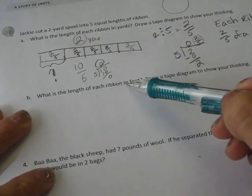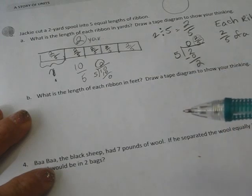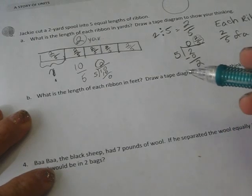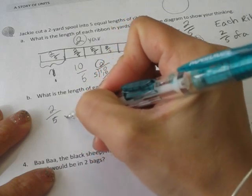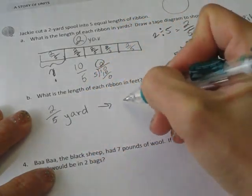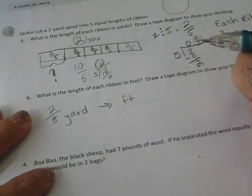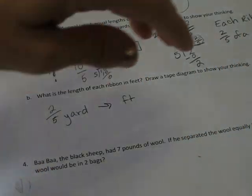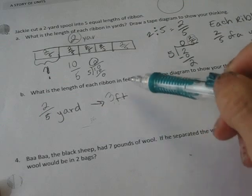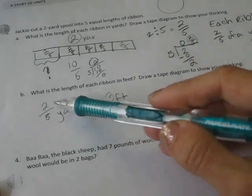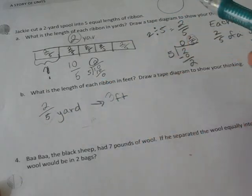What is the length of each ribbon in feet? Well this is 2 fifths of a yard. Okay. And I need to change it to feet. Well the first thing I need to know is how many feet are in a yard. I'm actually going to have you skip this one because it requires division of fractions and we don't know that one yet.